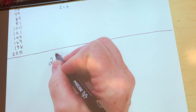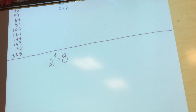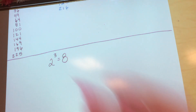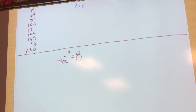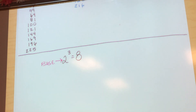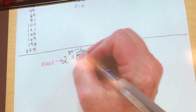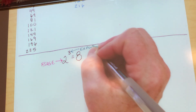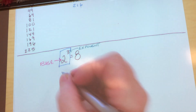Let's talk about some vocabulary you should already know. 2 to the third equals 8. In that expression, the 2 is called the base. The little number — the 3 — is called the exponent. And the whole entire thing together, 'two to the third,' is called a power.